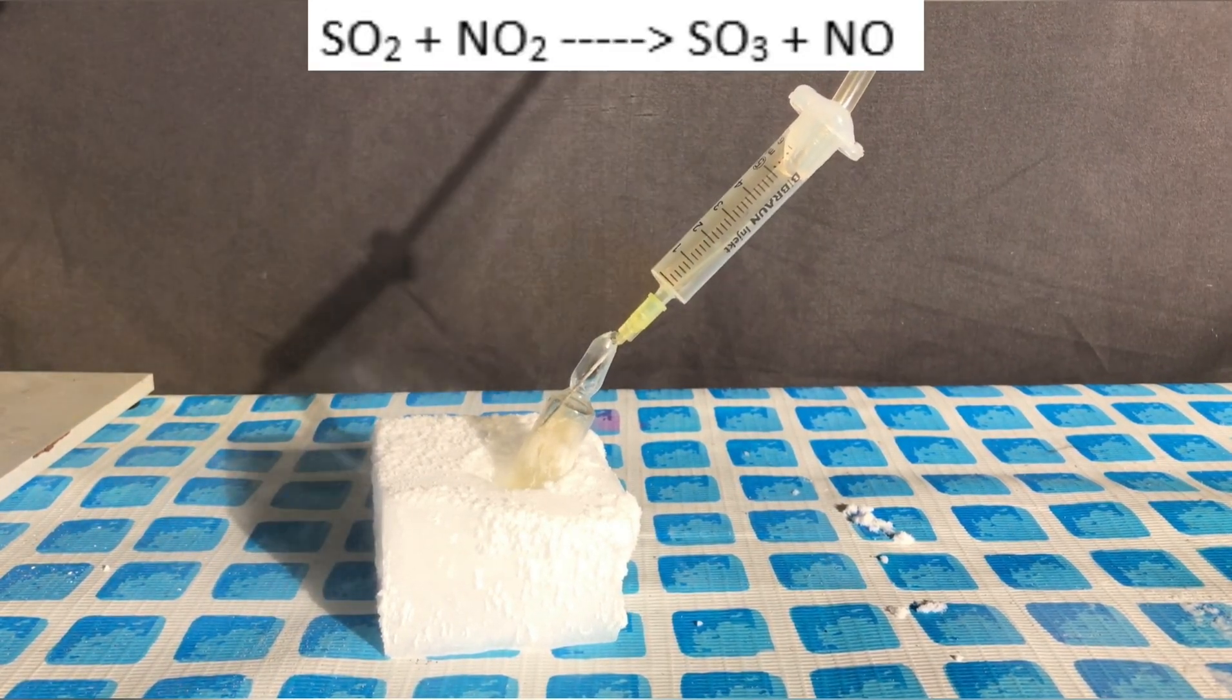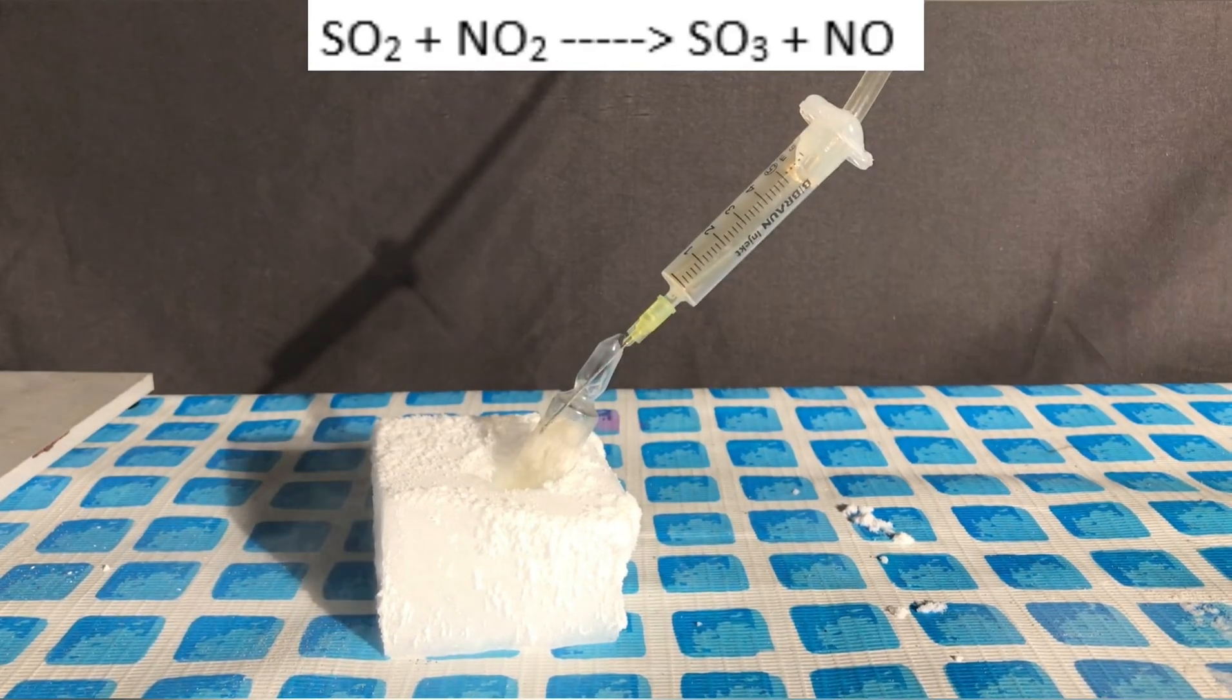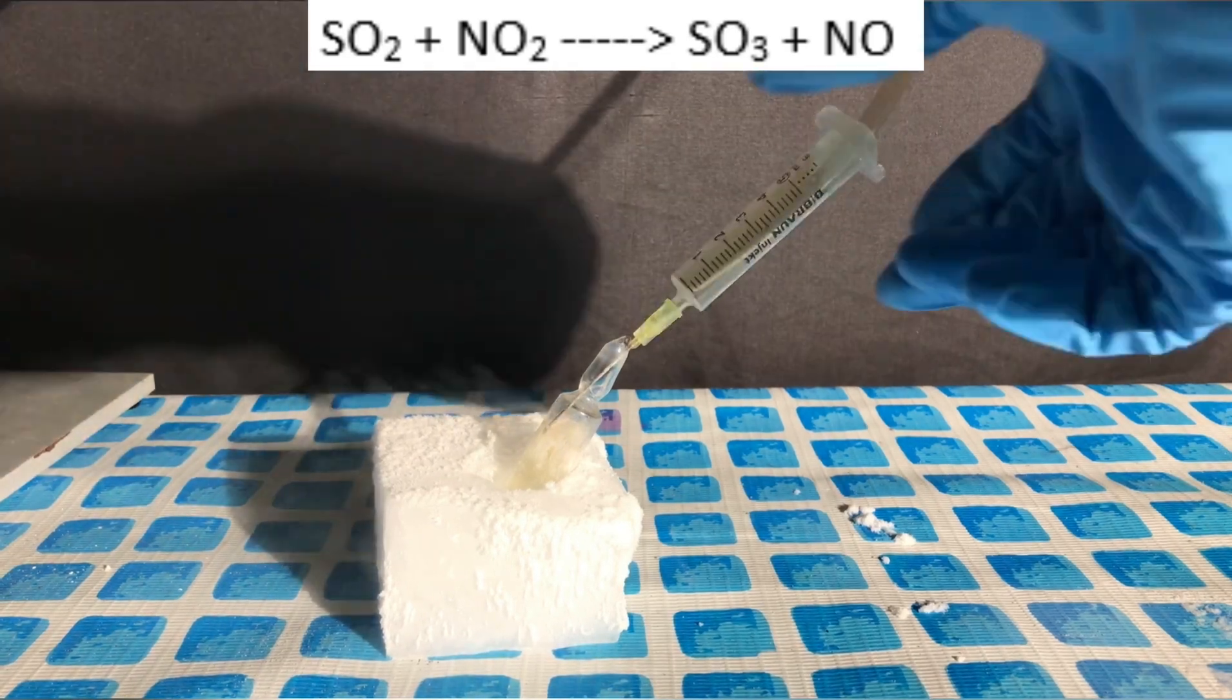In theory, I planned that the reaction would go like this. Sulfur dioxide and nitrogen dioxide react to form sulfur trioxide and nitrogen monoxide.